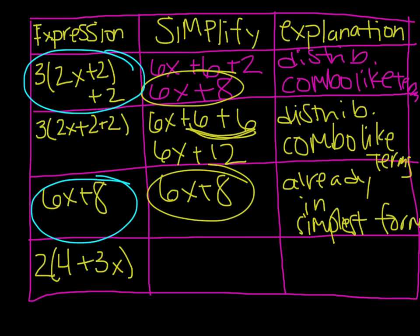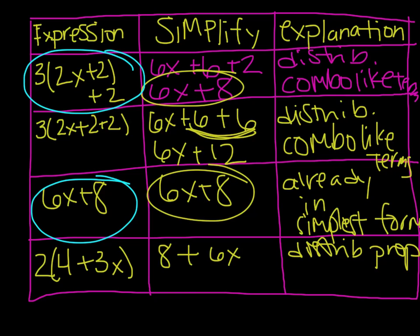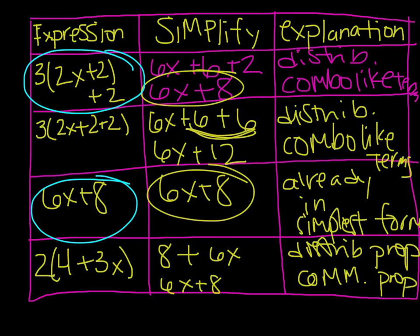For the fourth expression, I'm going to use the distributive property: 2 times 4 is 8, and 2 times 3x is 6x. Now the order is flipped — I have 8 plus 6x. What property allows me to move the terms in addition without affecting the outcome? The commutative property. So applying the commutative property gives me 6x plus 8.